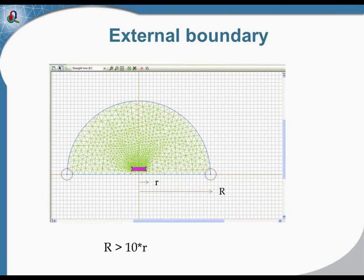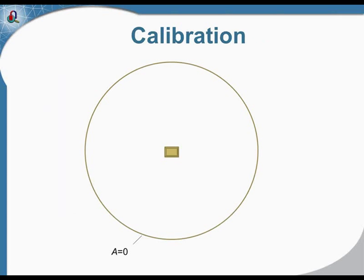First of all, we use finite elements, and due to the nature of this technology we need to have a closed calculation region. The magnetic field may be infinite — it may fade to a very far distance — but we need to restrict it, and this brings some computational error. For most practical purposes, if we make the external boundary more than 10 times further than the size of your object, the accuracy is pretty good. So first, you should enclose your system by some boundary and make it not too close to the object.